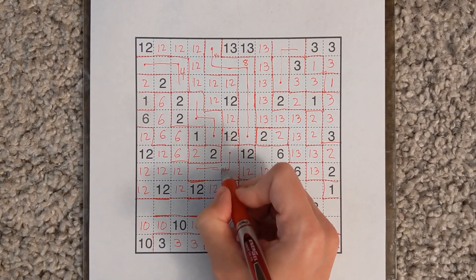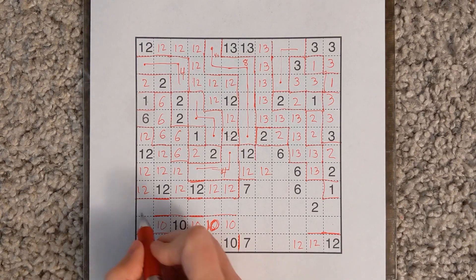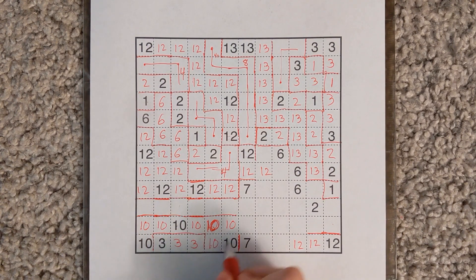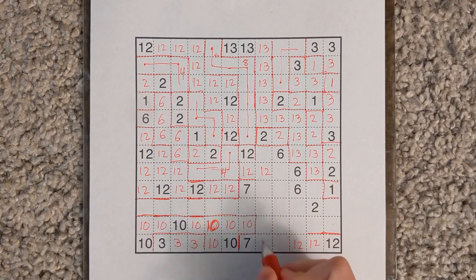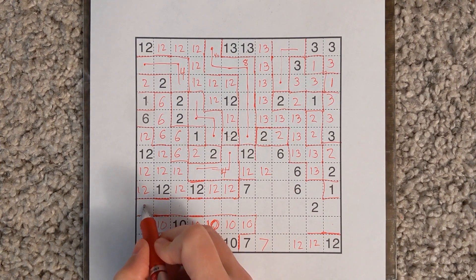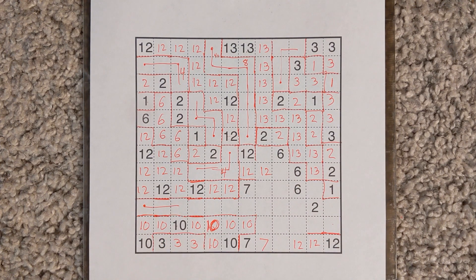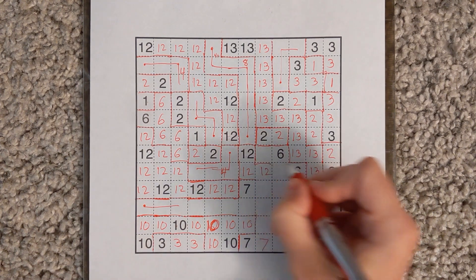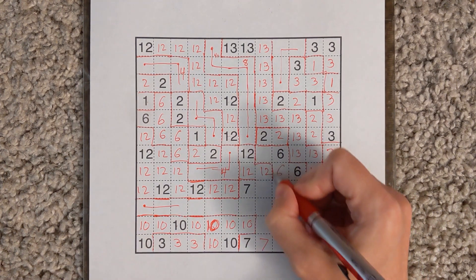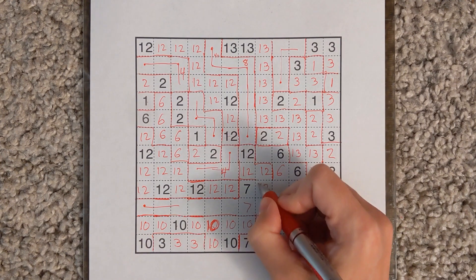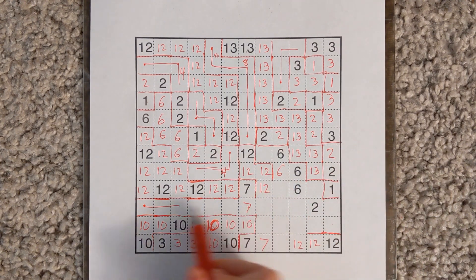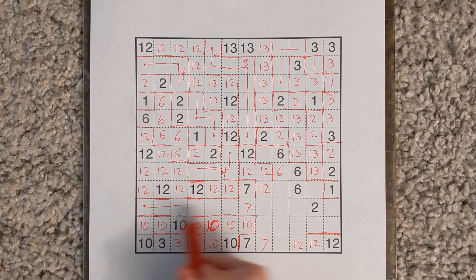This 10 can't come down here. So it's going to have to come over here and finish itself like so. There's a hidden polyomino that starts here and is at least 3 large. This 6 is going to come down. This 12 is going to come down. This 7 is going to come down.